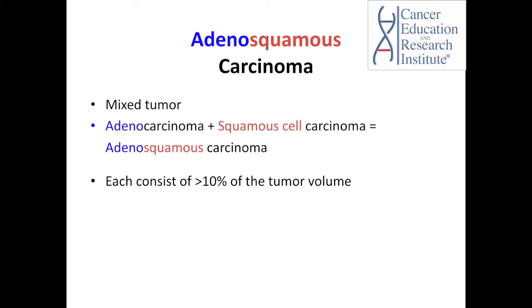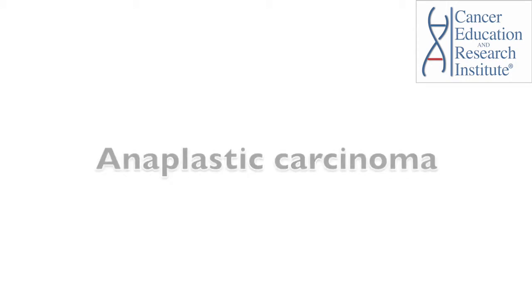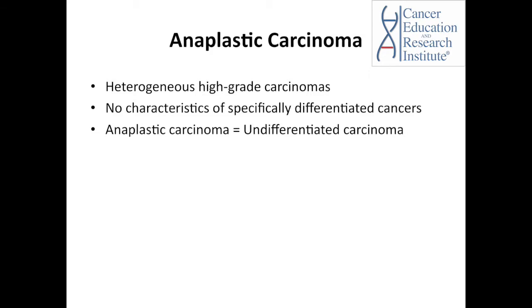There is another type called adenosquamous carcinoma. This is a mixed tumor containing both adenocarcinoma and squamous cell carcinoma, in which each of these cell types consists of at least 10% of the tumor volume. Anaplastic carcinomas are a heterogeneous group of high-grade carcinomas in which cells do not show any characteristics of specifically differentiated cancers. These tumors are called anaplastic or undifferentiated carcinomas.